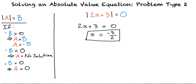In an absolute value equation written as the absolute value of a equals b: if b is greater than 0, then a equals b or negative b — I can solve a equals b and then a equals negative b to find the two solutions. However, if b is less than 0, then the absolute value equation has no solution. If b equals 0, then there is only one answer.